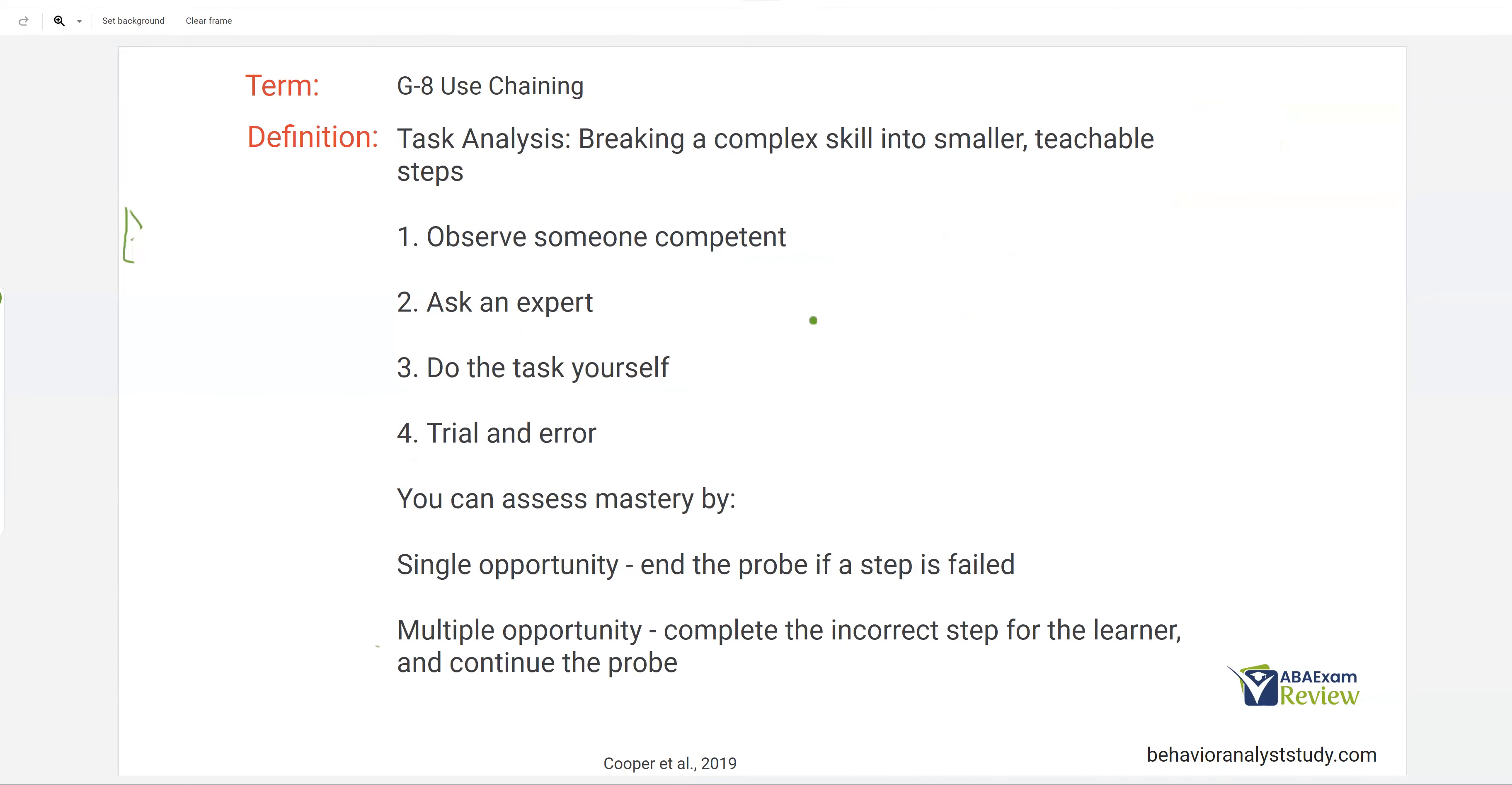So for example, when you have a complex skill, you can break it into smaller teachable steps in several different ways. First, you can observe someone competent. We want to avoid, with the task analyses, looking at someone simply the same age as our learner, for example. Because if you're working with a five-year-old, another five-year-old might not be the best person to observe completing a skill, especially if the skill is rather difficult.